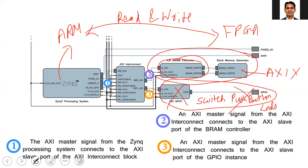The AXI block RAM controller takes the AXI interface as input, so it can take the read and write transactions and converts them into the language that can be understood by the block RAM memory — in terms of address, data, write enable signal, clock signal, and so on. So the AXI block RAM controller converts the AXI signals from the AXI interface to the non-AXI interface.